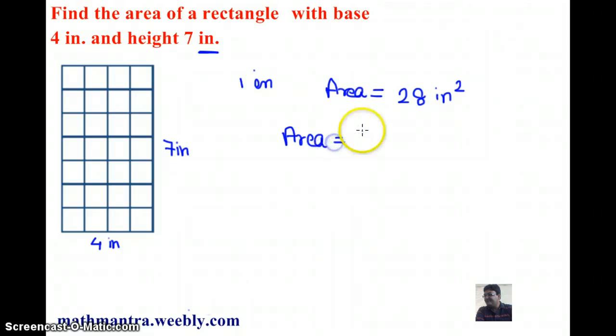Now another way to find out the area of a rectangle is of course to use the formula base times height. So the base here is clearly 4 inches and height is 7 inches. So when we multiply, we get 28 inches square. So the area for the rectangle is 28 square inches.